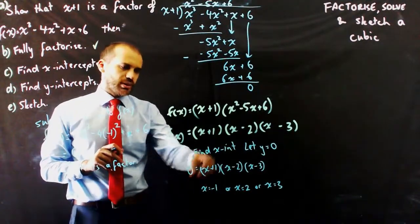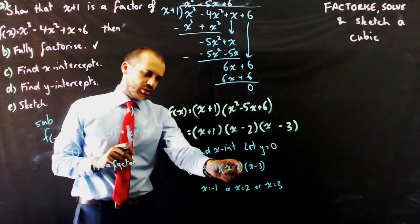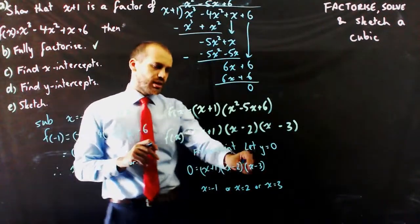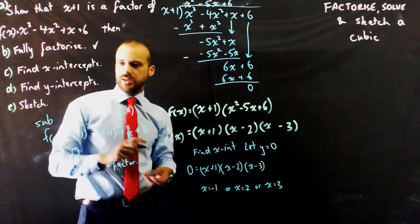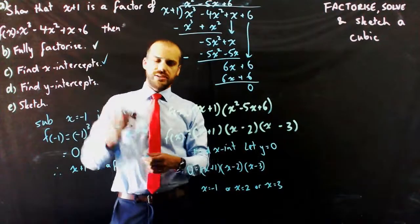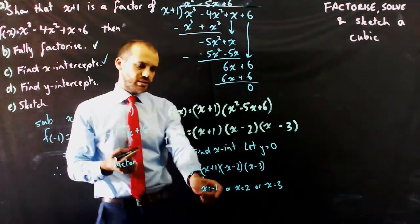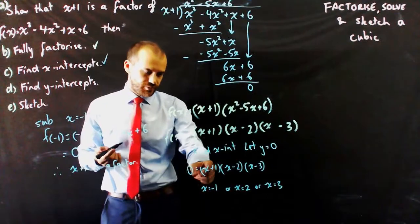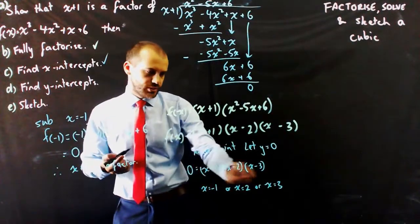I did it by just saying x plus 1 equals 0, so x equals negative 1. x minus 2 equals 0, so x equals 2. x minus 3 equals 0, so x equals 3. So, those are my x intercepts. If I was to sketch f of x, it's also just the solution to 0 equals that.